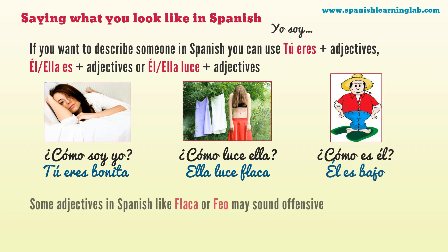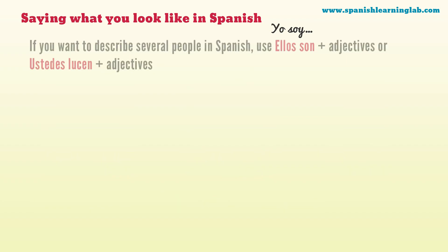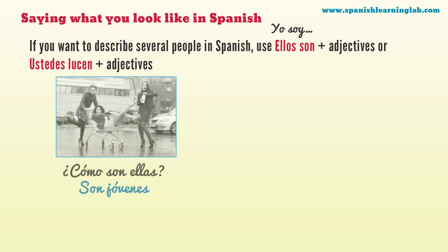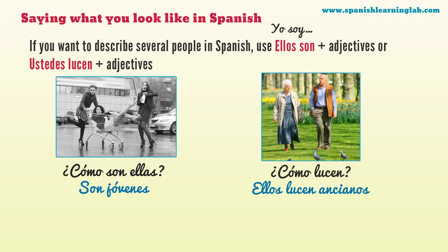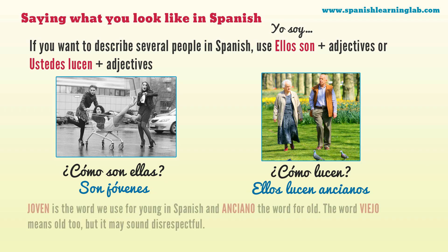¿Cómo es él? Él es bajo. Some adjectives in Spanish like flaca, gordo, and feo may sound offensive, so be careful. If you want to describe several people, you can use ellos son plus adjectives or ustedes lucen plus adjectives. For example: ¿Cómo son ellas? Son jóvenes. ¿Cómo lucen? Ellos lucen ancianos.